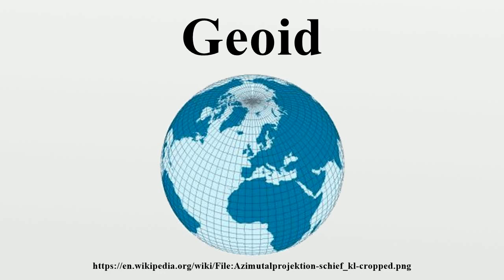The geoid surface is irregular, unlike the reference ellipsoid which is a mathematical idealized representation of the physical Earth, but considerably smoother than Earth's physical surface. Although the physical Earth has excursions of +8,848 meters and −429 meters, the geoid's variation ranges from −106 to +85 meters, less than 200 meters total compared to a perfect mathematical ellipsoid.